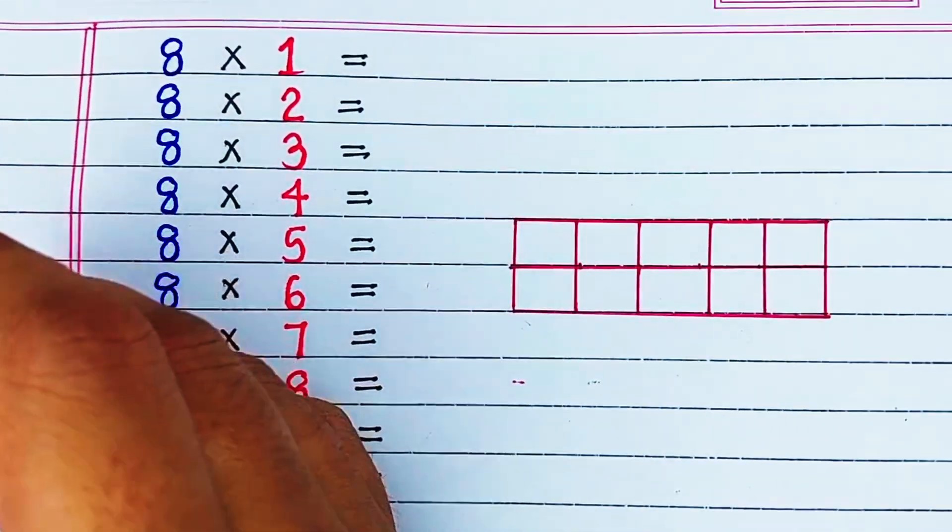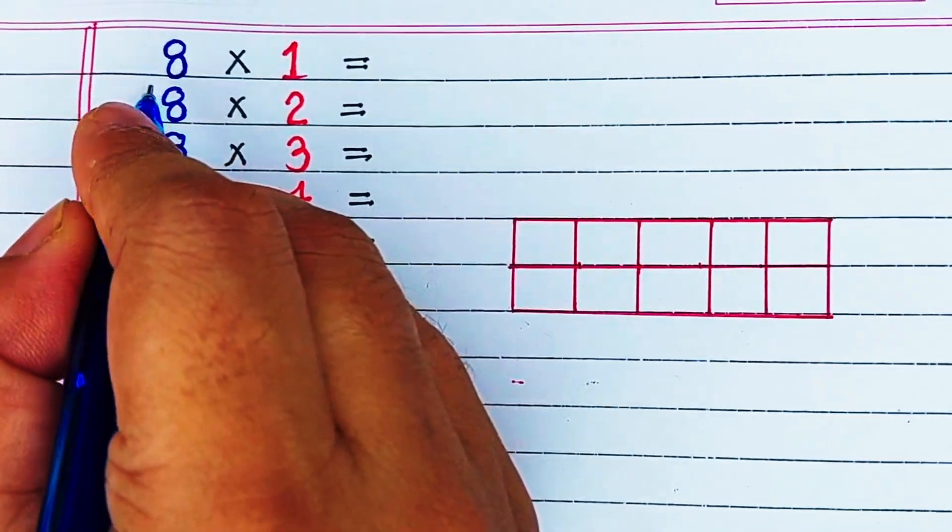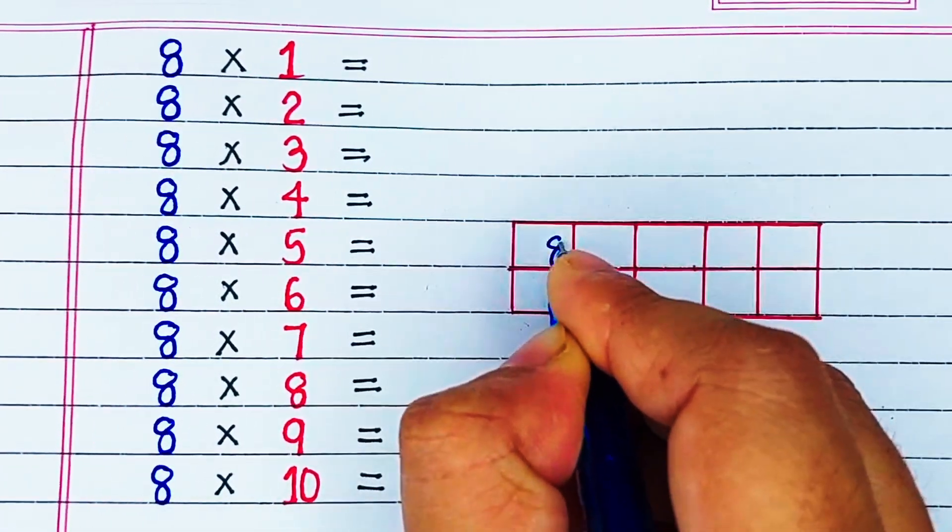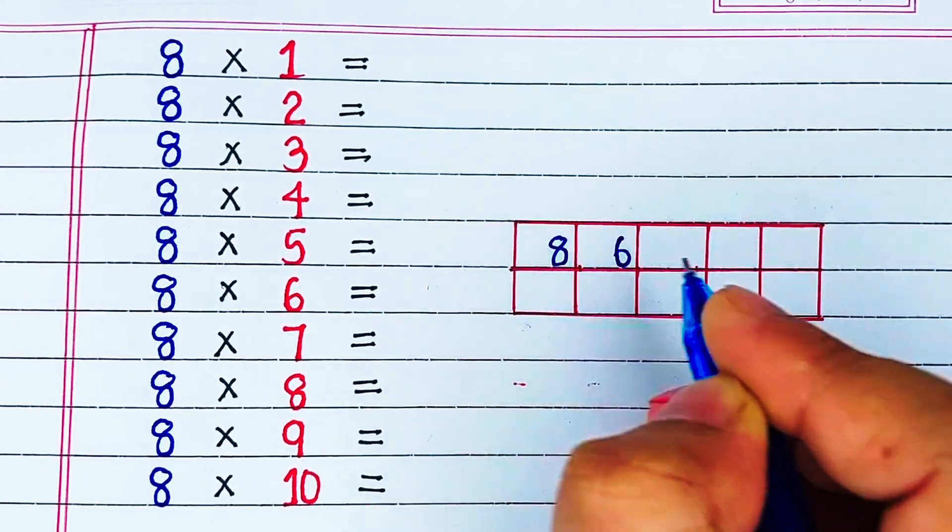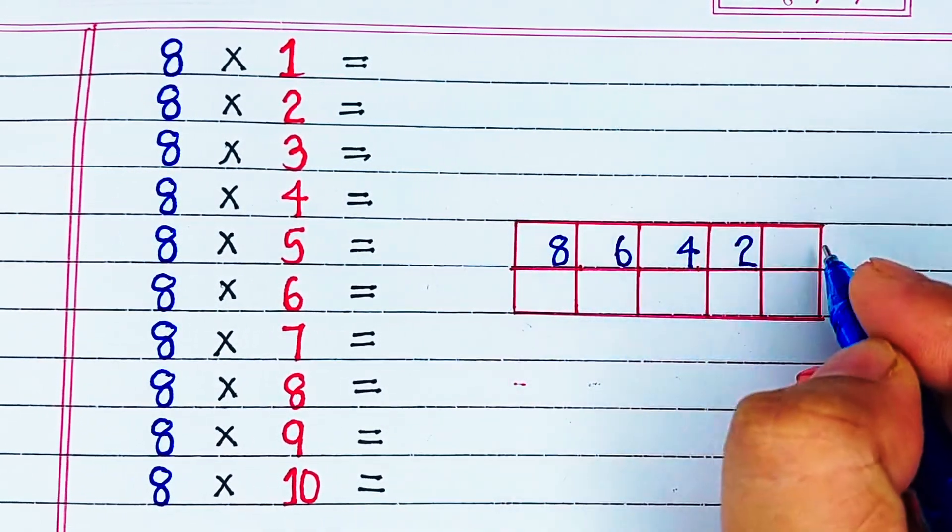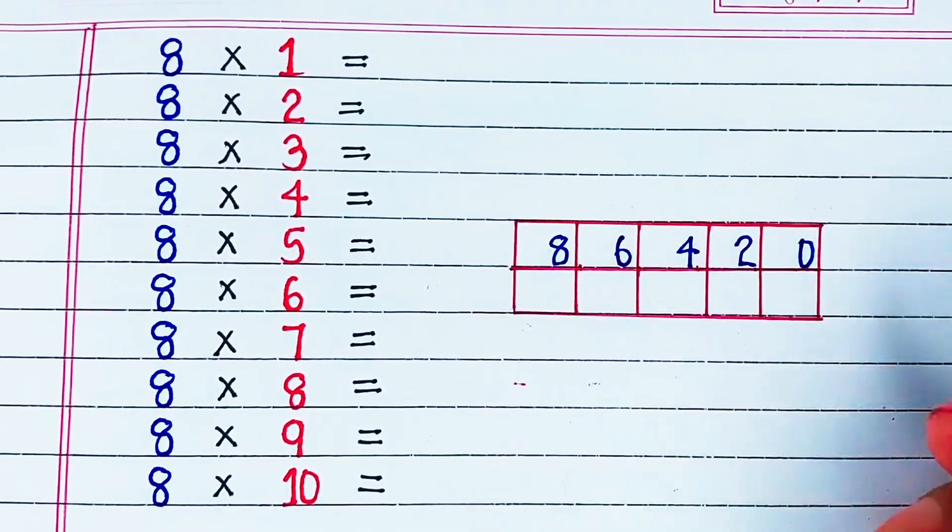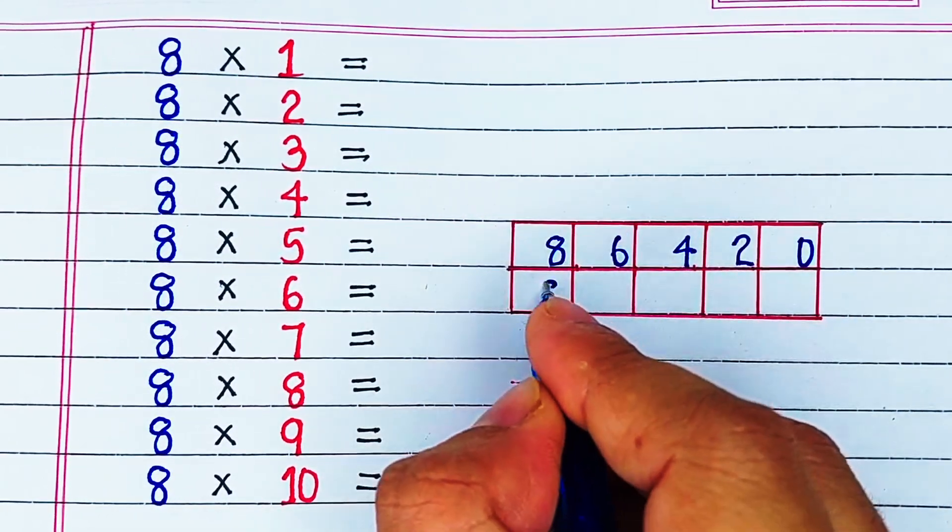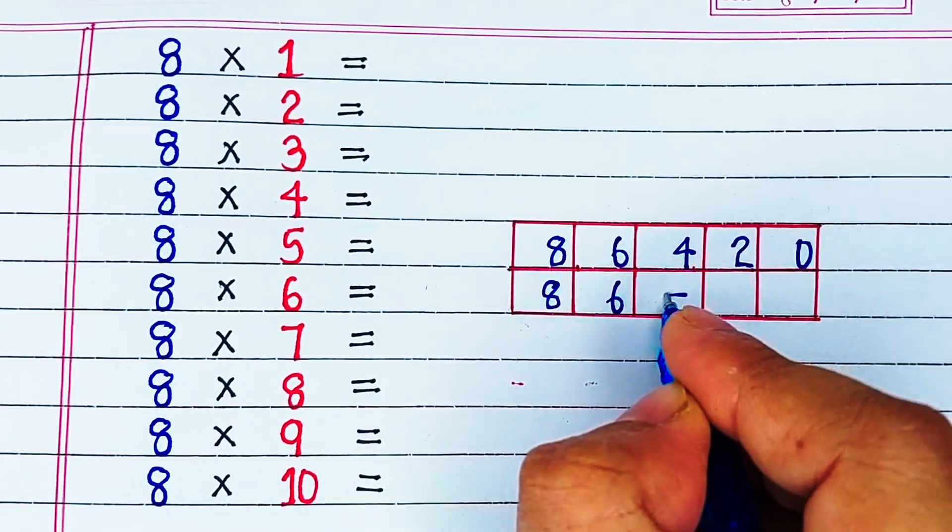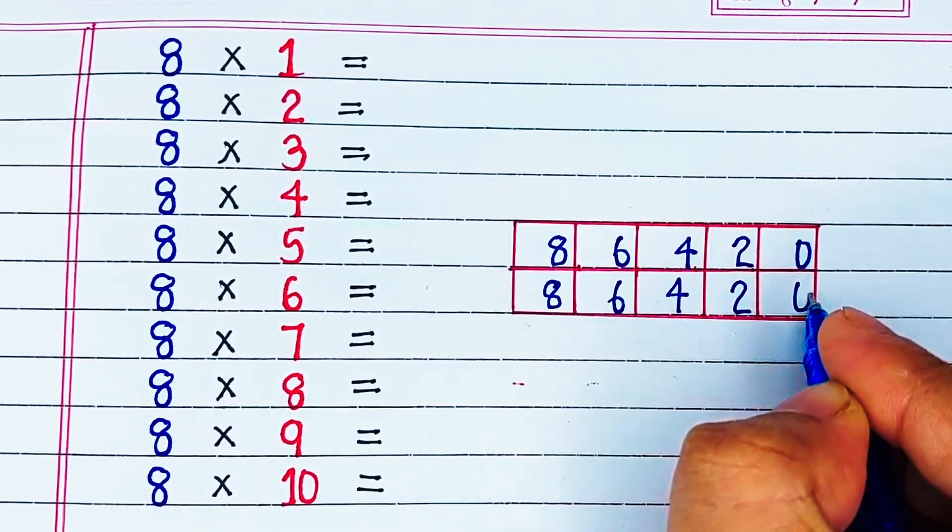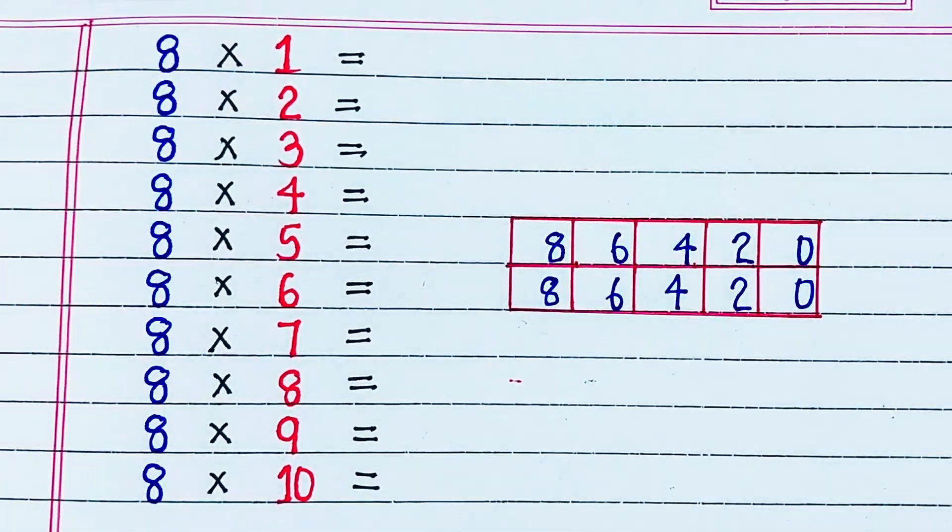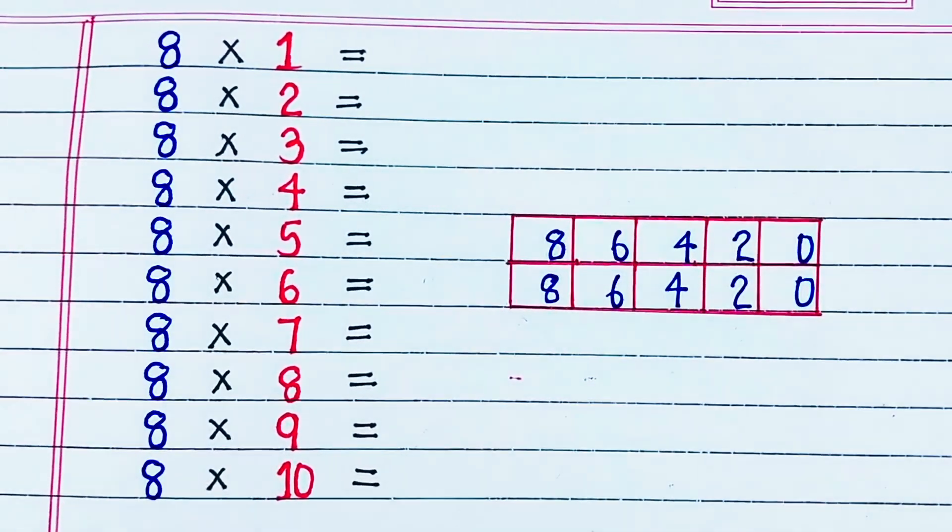Now we will learn the trick for multiplication table of 8. We will start by drawing a 5 by 2 grid with 2 rows and 5 columns. In the left most top corner, we will start from 8 and we will write numbers by reducing 2 each time like 8, 6, 4, 2, 0, and we will repeat the same for the lower row also.